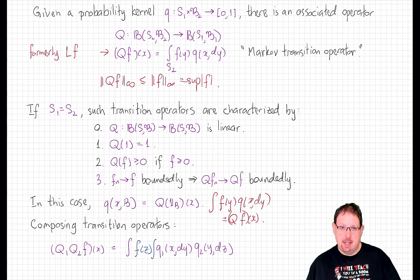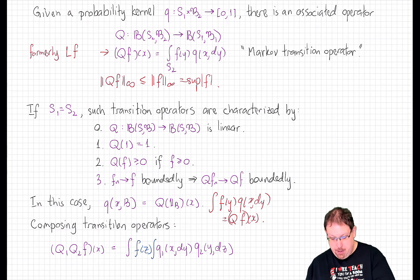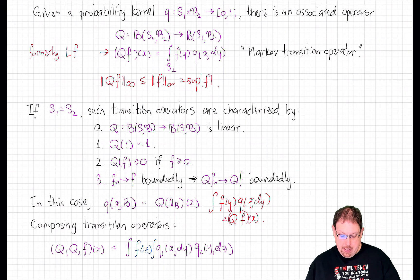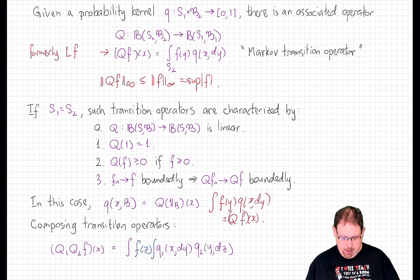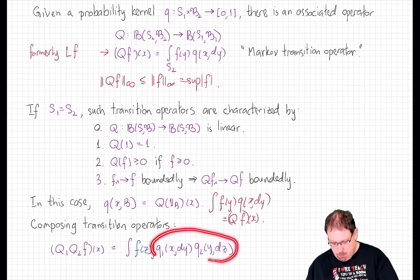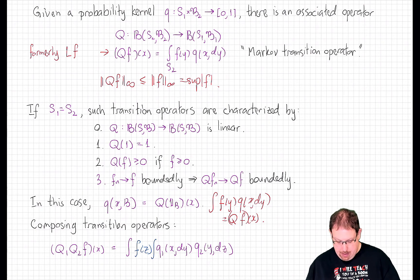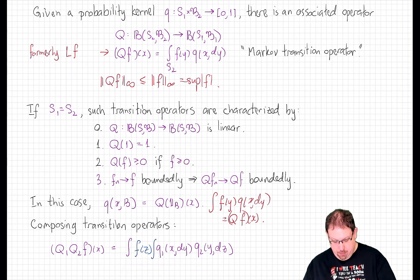One advantage of representing probability kernels in terms of their Markov transition operators is that it's easy to compose them. If I have two operators Q acting on bounded functions on a state space, composing them gives a new linear operator which one can easily verify satisfies all the required properties. Therefore, by the correspondence, it is the transition operator of a unique probability kernel. The composition of Q1 and Q2 acts on f by integrating f of z against the kernel obtained by integrating out the y variable of Q1 of x dy times Q2 of y dz, giving a probability kernel in x and dz.